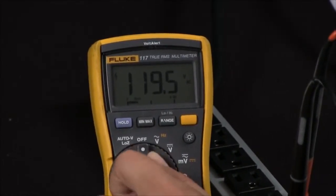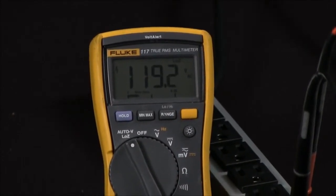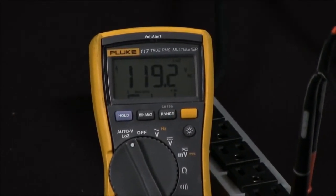In our second step we'll go ahead and turn this to the low impedance setting and you're still going to have a true voltage reading of 120 volts.